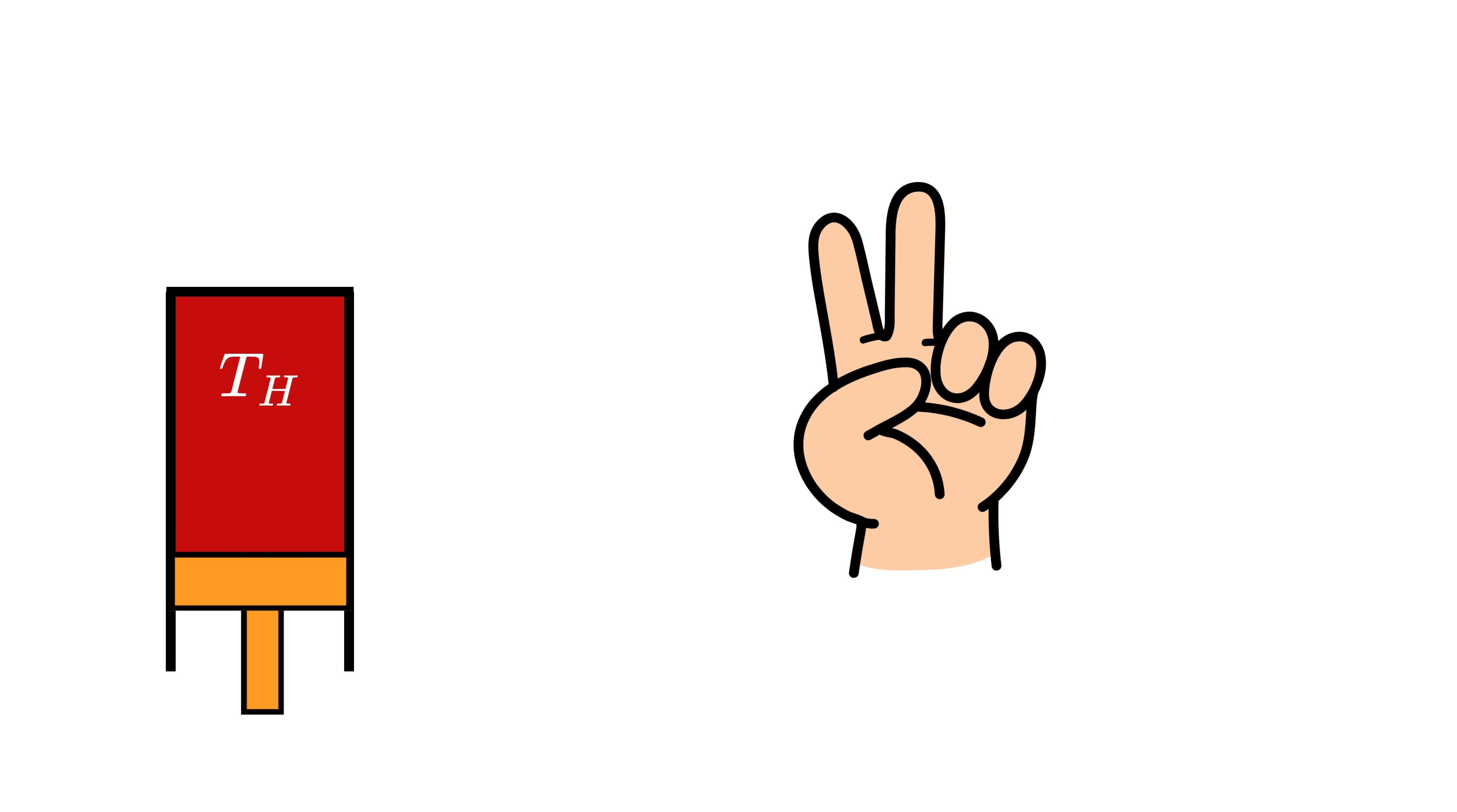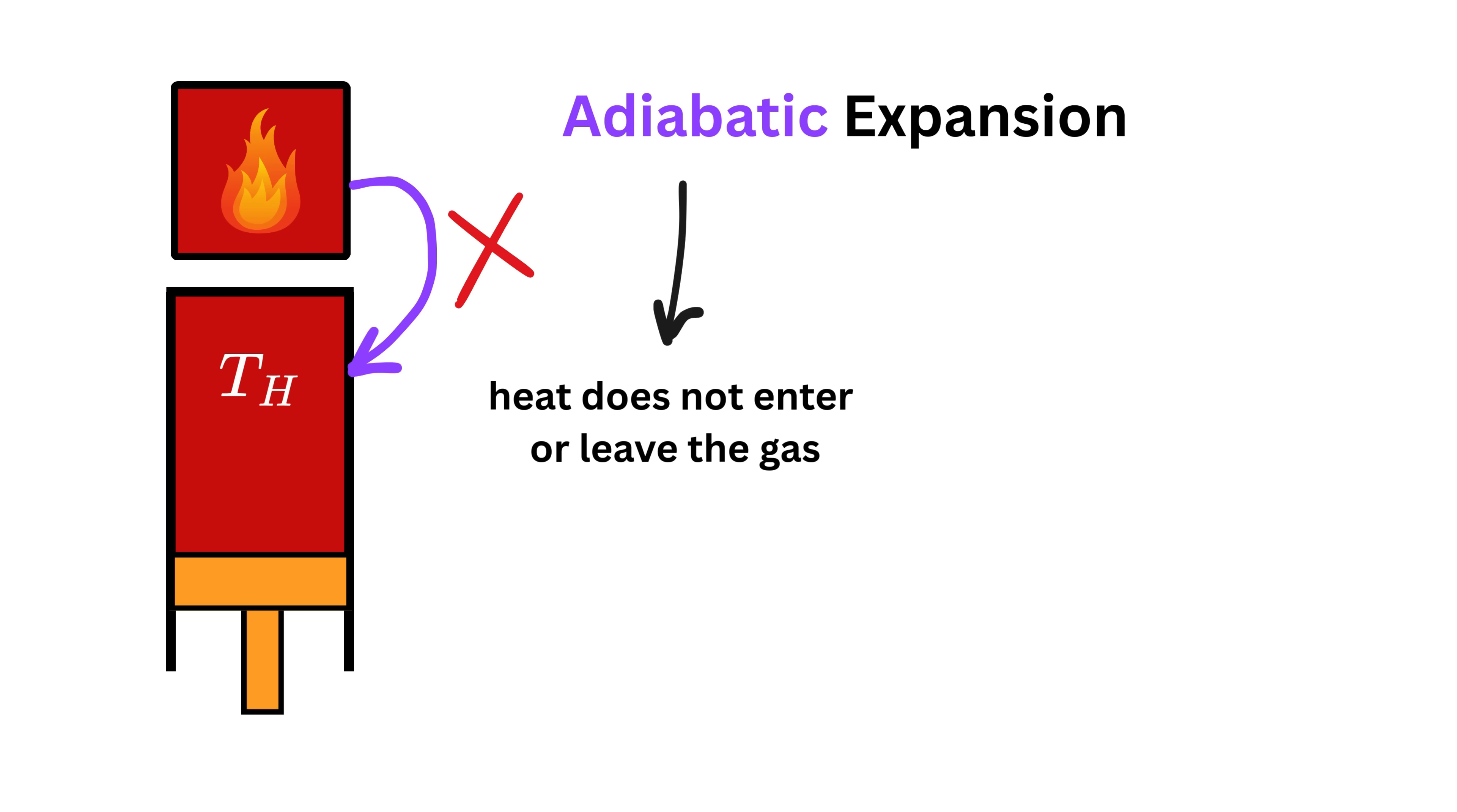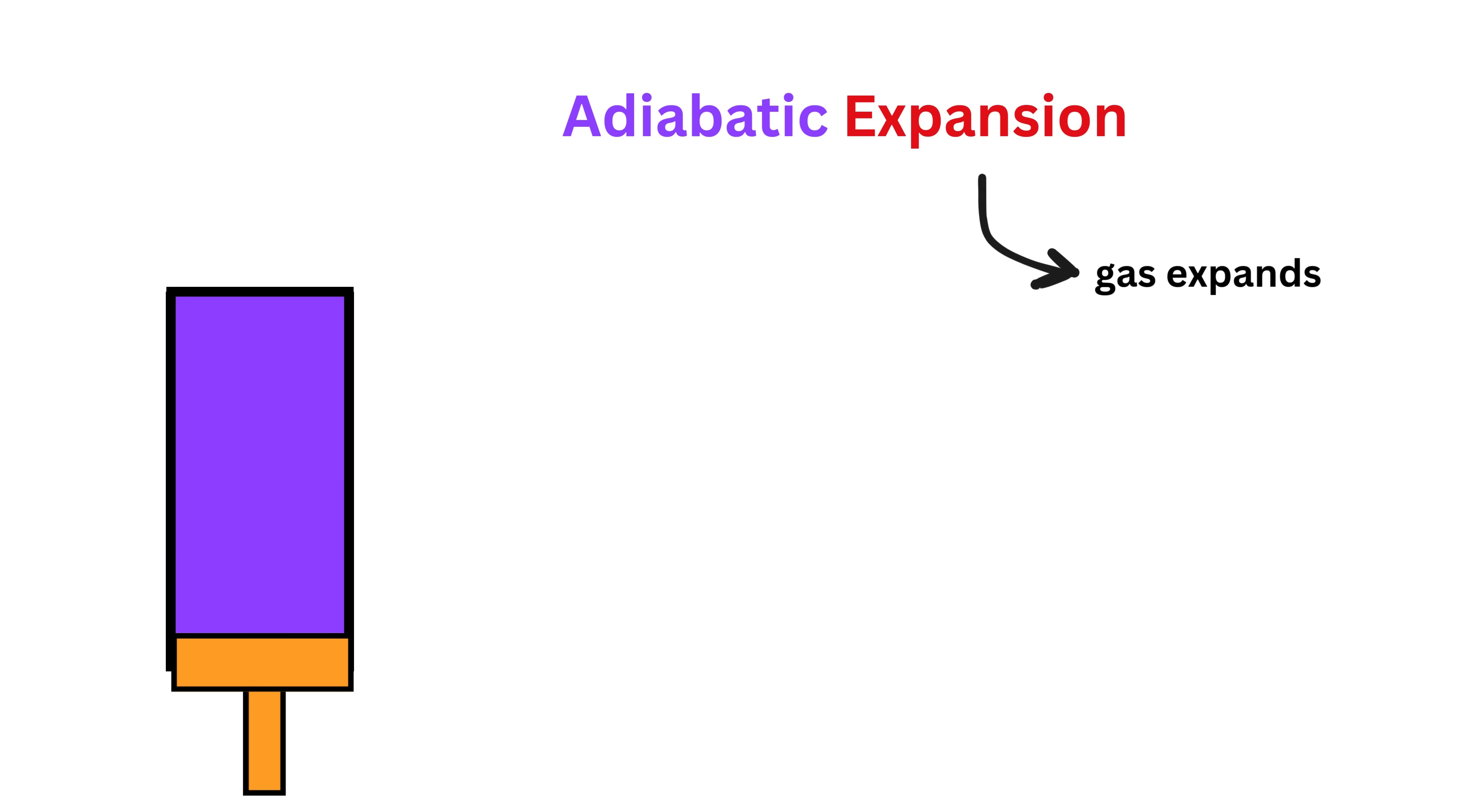The second step is called an adiabatic expansion. Adiabatic means no heat is allowed to enter or leave the gas. It is as if the heat reservoir has been completely switched off. In this step, the gas is completely insulated so it cannot receive any heat from outside or release any heat to the cold side. But the piston is still moving outward, so the gas has to use its own stored internal energy to do the work.